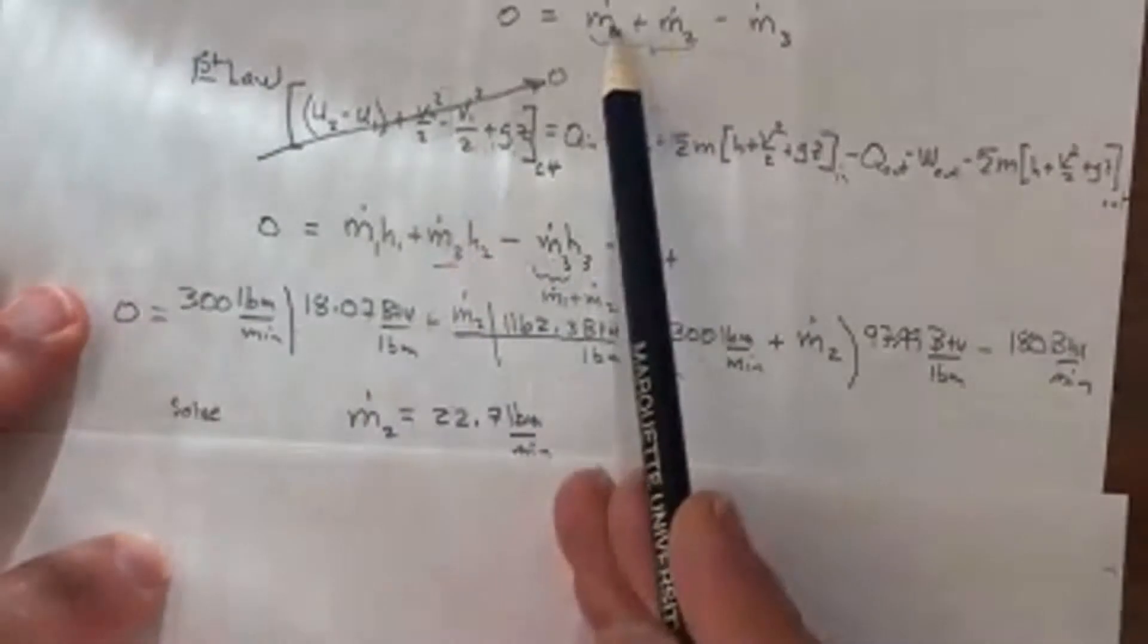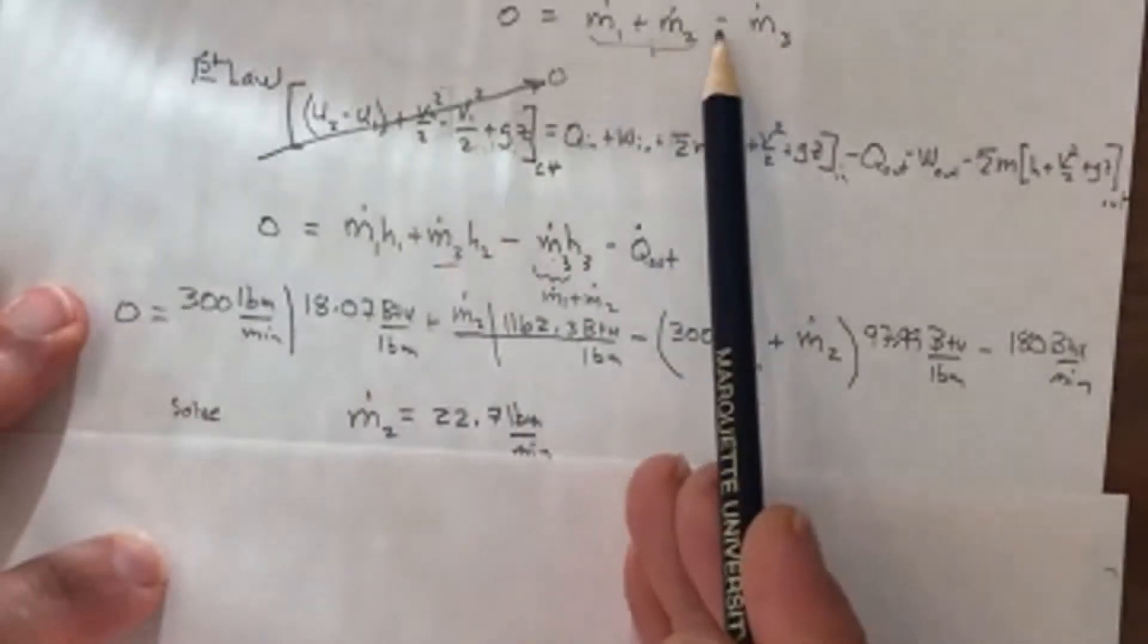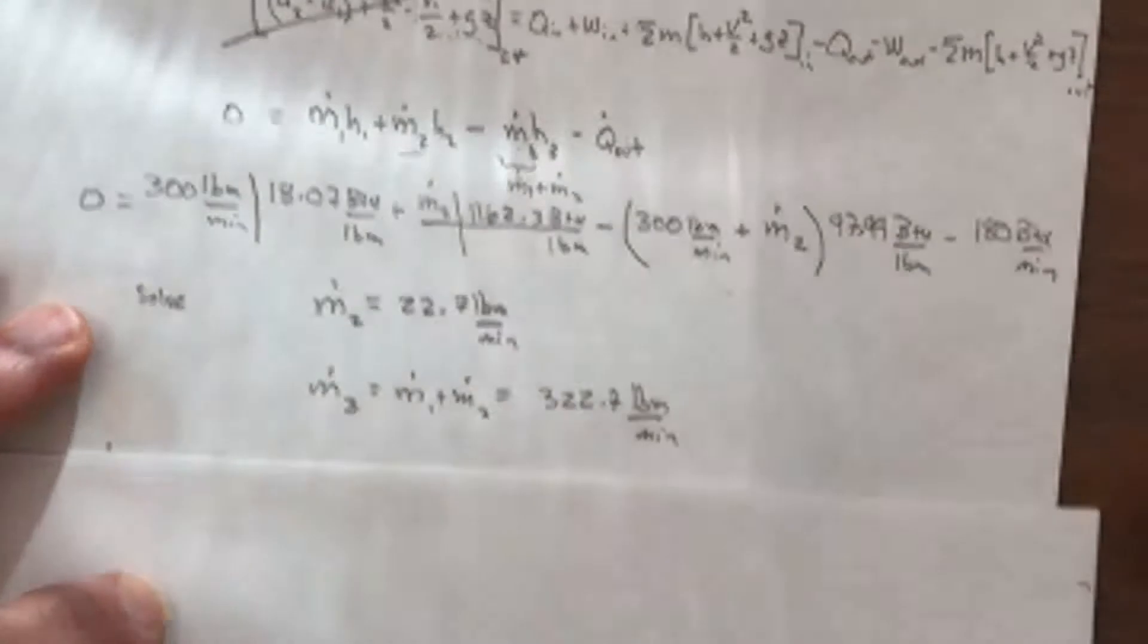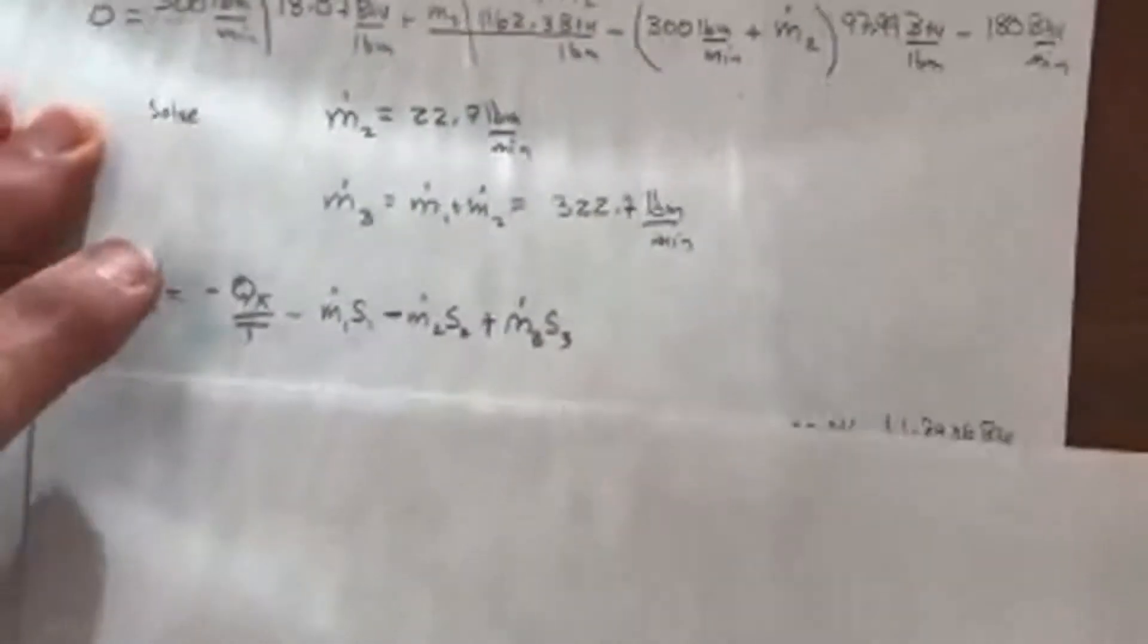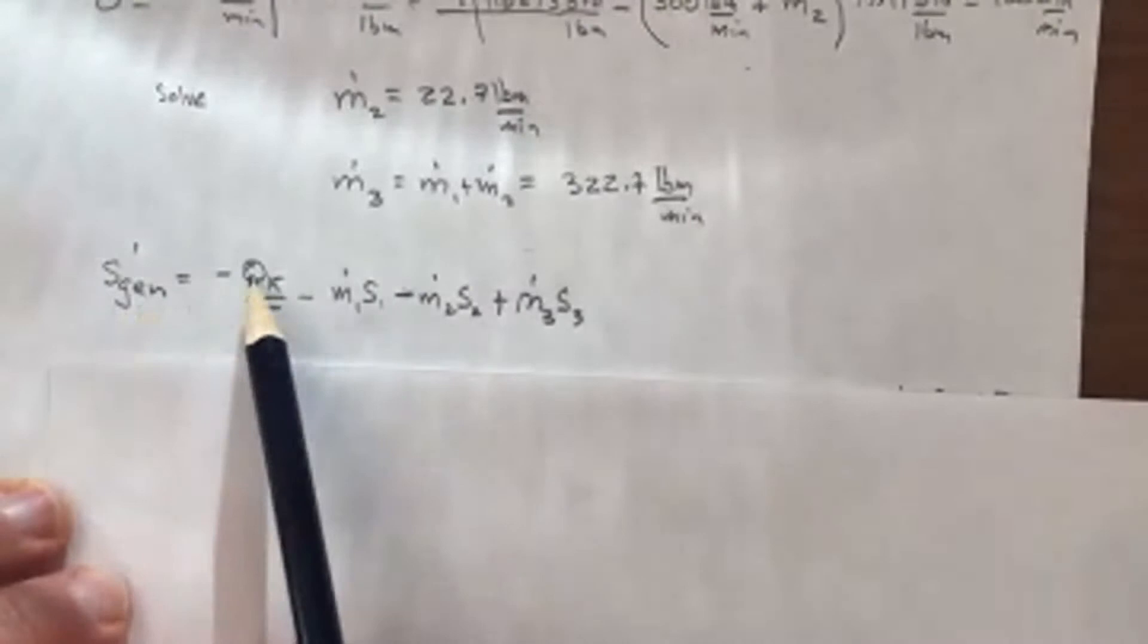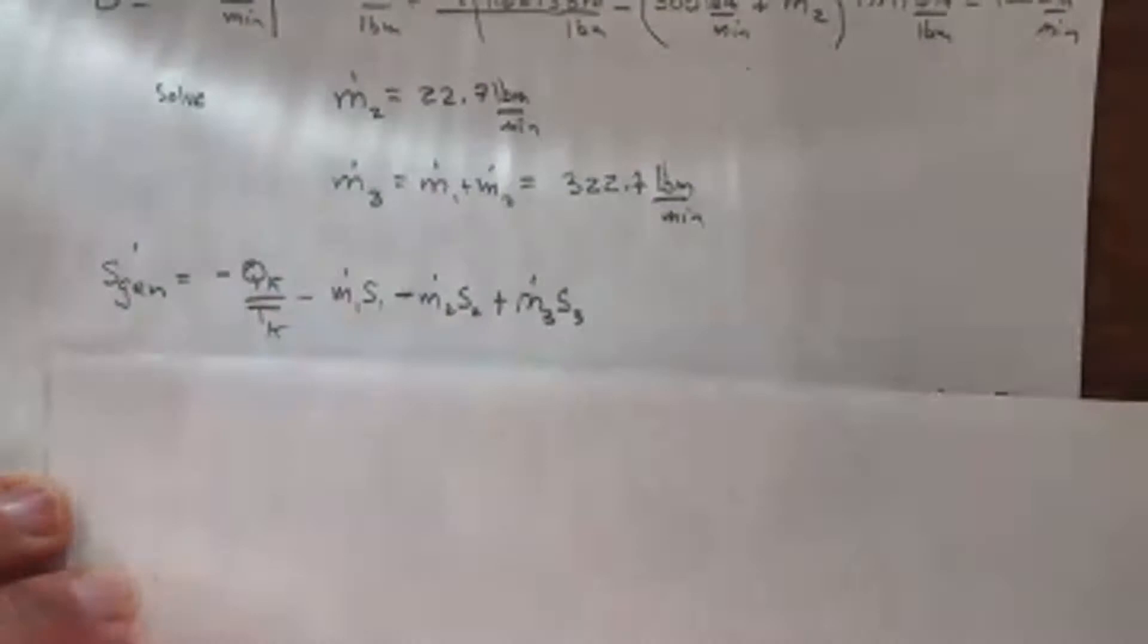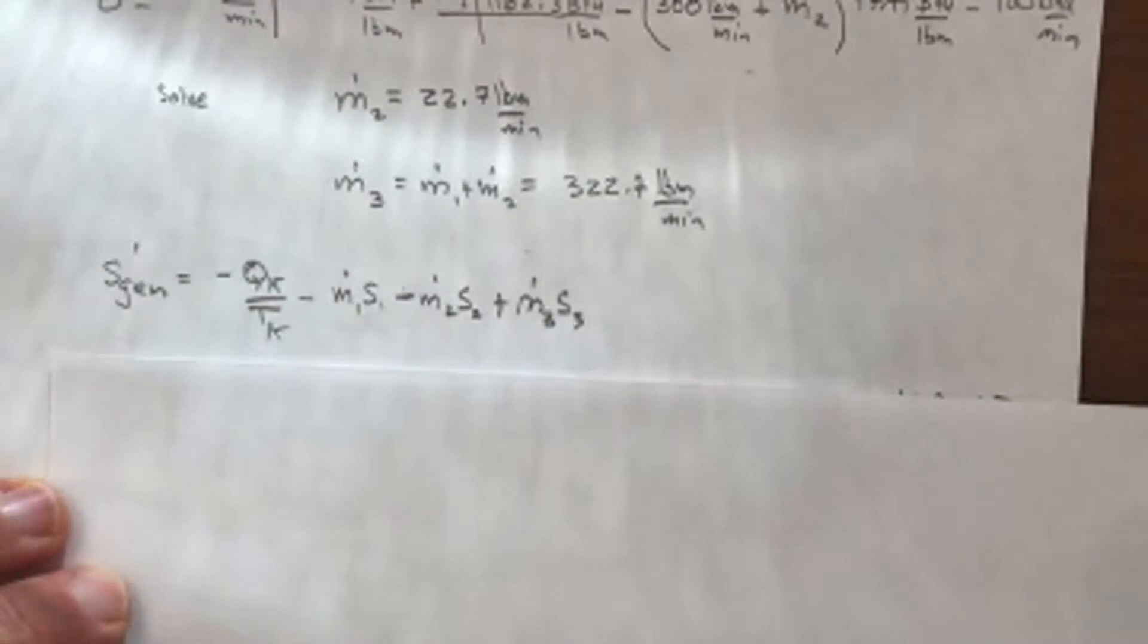Once I get M dot two, I know M dot one and M dot two, so I could solve for M dot three and get those values. And then finally, I could plug it into my entropy generation equation, and S gen equals minus K over TK minus M dot S one S two S three.